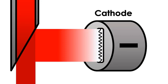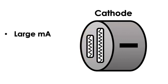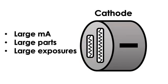But it's not all bad for the large filament. Because the large filament is so large, it can be used for large mA. This is important when imaging large body parts that need large exposures.